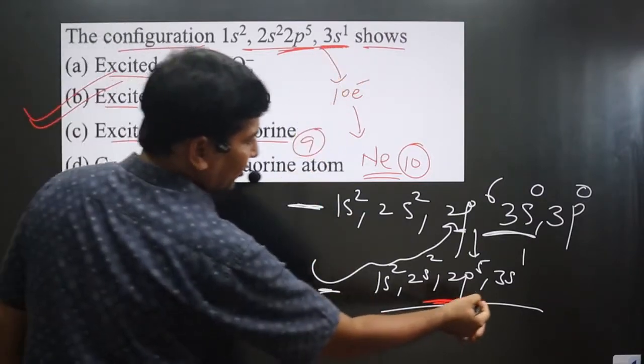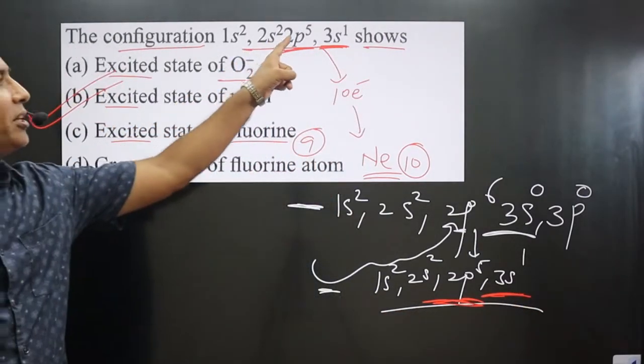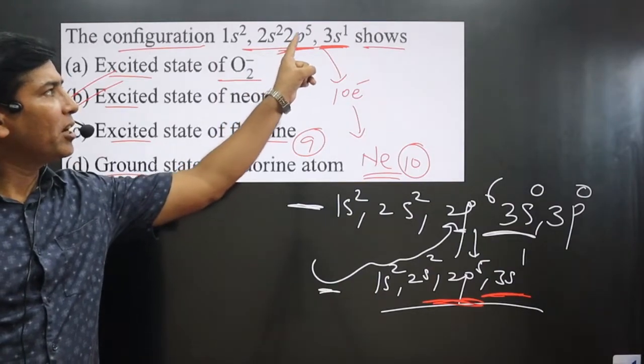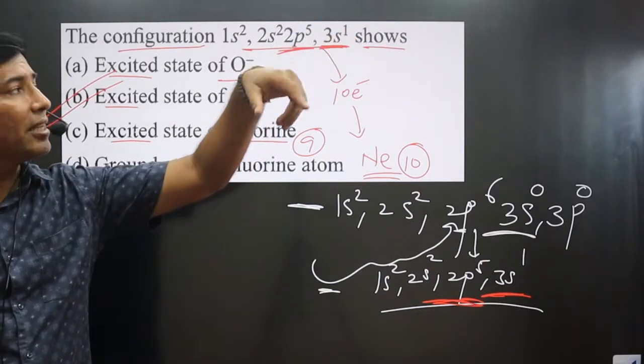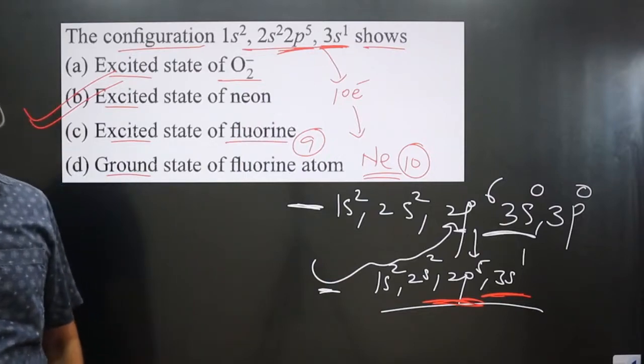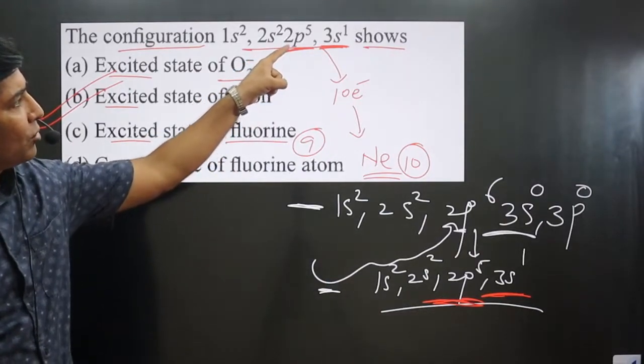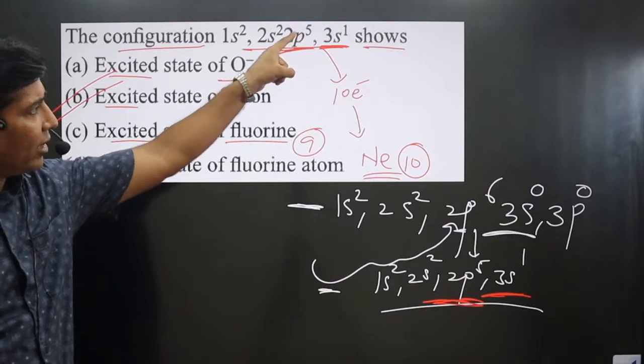Before completely filling the p orbital, we are filling the outer shell - the higher energy orbit. This happens due to supplying energy to the outer shell, due to which electrons jump to the higher energy state. Option B.